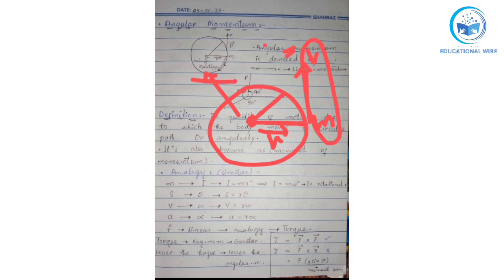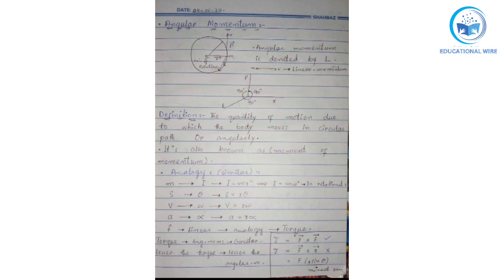Here we have mass m, and where m and v conjugate together they make linear momentum p. So p is equal to mv. After that, if we have the reaction upward side, we have weight downward side. That weight is represented by L, and basically L is called the angular momentum. L is equal to mvr is called angular momentum.